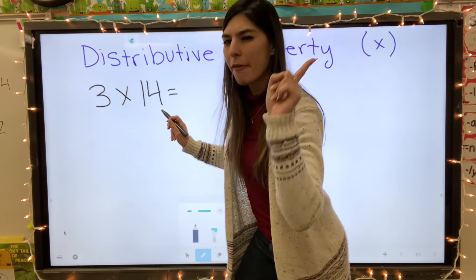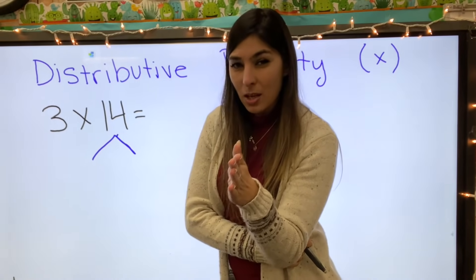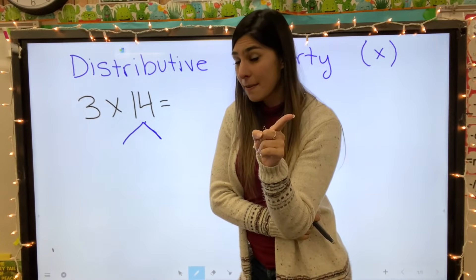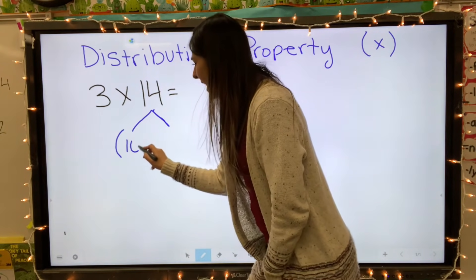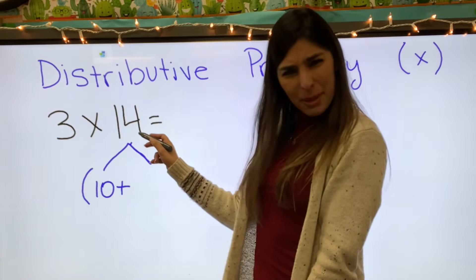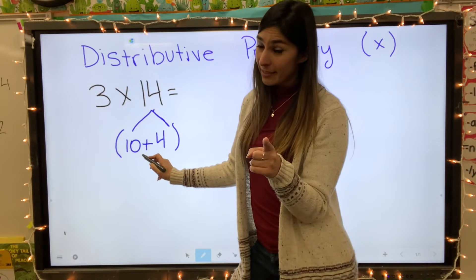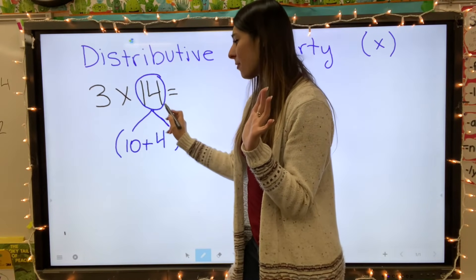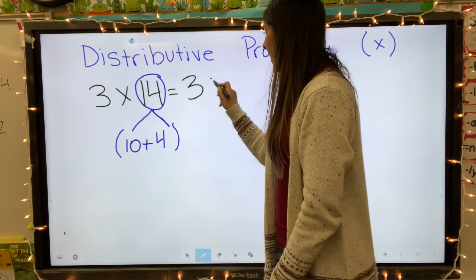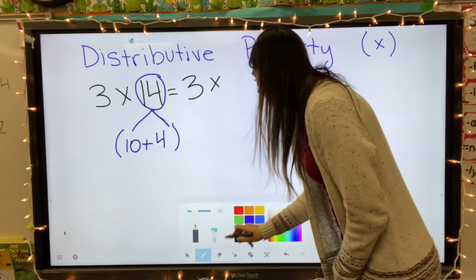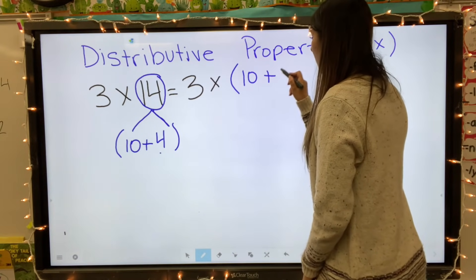Let's go ahead and split that fourteen up. Think about how we can break up fourteen. If we split it right down the middle — chop it — we'll see tens and ones. How many tens are in fourteen? One. So I'm going to add my parentheses and write ten plus four, because ten plus four equals fourteen. This is our new equation: instead of three times fourteen, we write three times, and plug in this equation — parentheses and all — ten plus four.